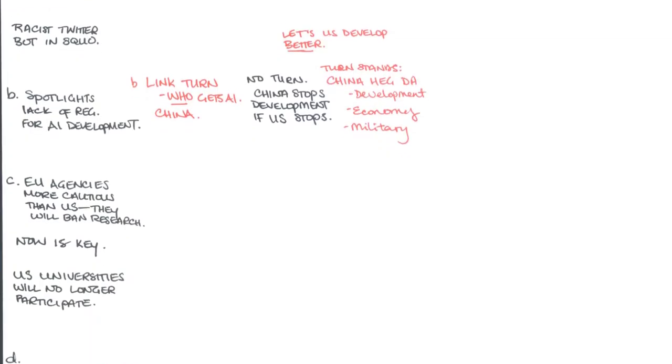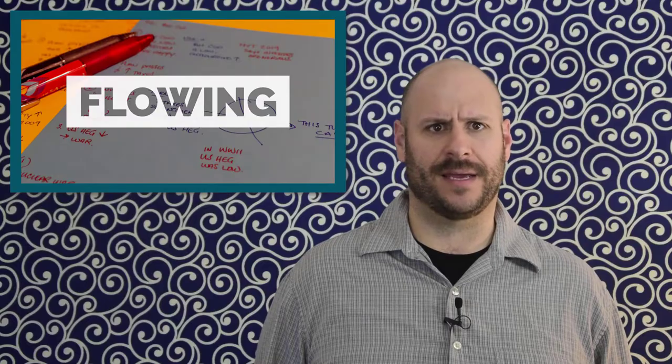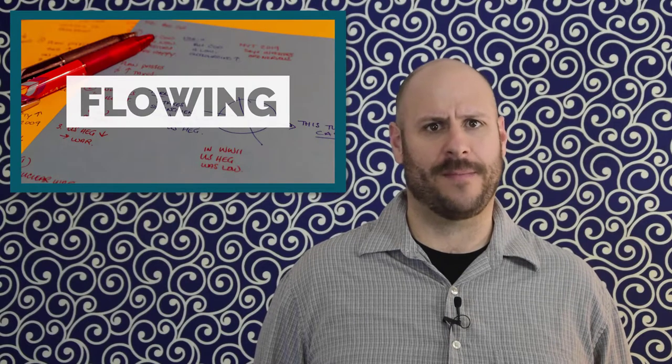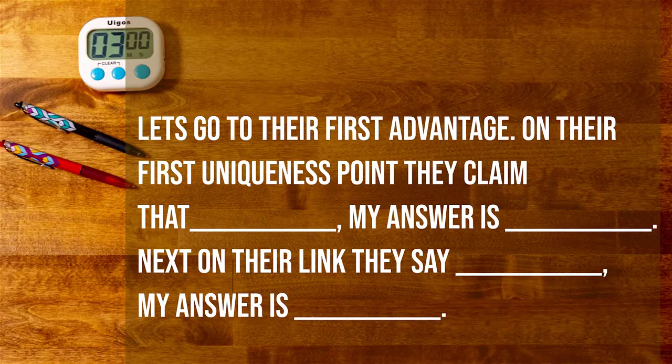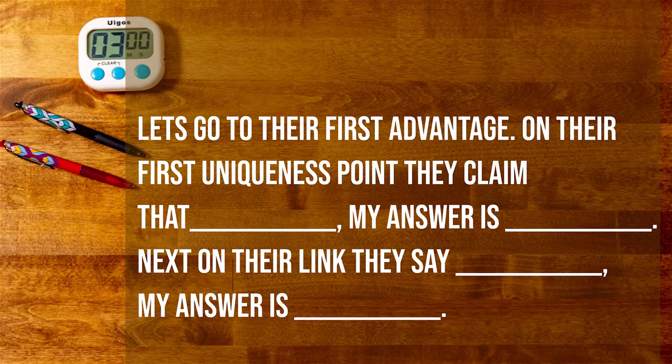In practice, debaters using the line by line technique will tell the judge which claim they are answering with every argument they make. For example, a negative team responding to an affirmative advantage might say something like this: Let's go to their first advantage. On their first uniqueness point, they claim that—then briefly summarize their argument. My answer is—briefly summarize your argument. Next on to their link, briefly summarize their argument. My answer is, briefly summarize your argument.